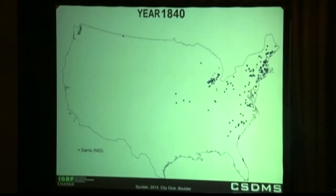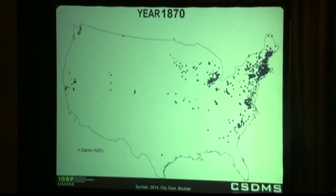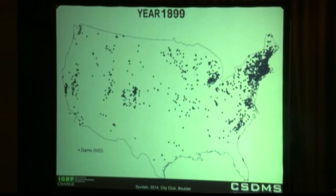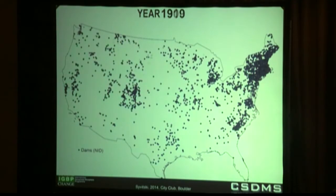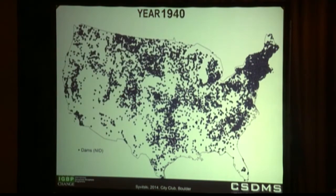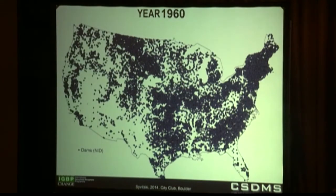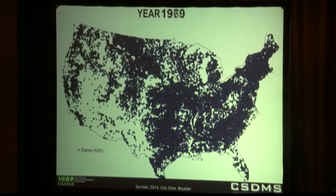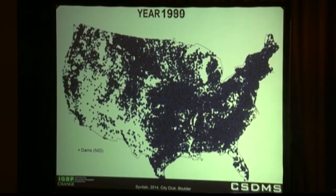This is a map of the dams in the United States, and you can see the migration of the Europeans across the continent. You see the year ticking by on top and the dams proliferating across the country. I call it my matrix movie.